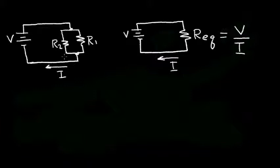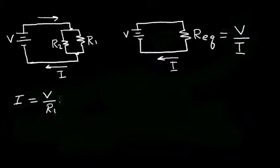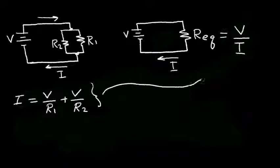The circuit on the left has a branch in the current. The current flowing from the battery is divided between R1 and R2. We can calculate the current in R1 and R2 and add them together to get the total current I. So the current I is equal to the current flowing in the R1 branch — which is the voltage across R1 divided by R1 — plus the other current flowing in R2, which is the voltage across R2 divided by R2.